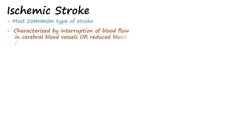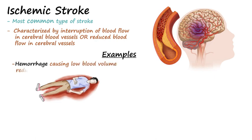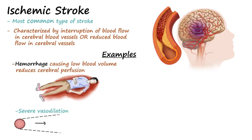The most common type of stroke is an ischemic stroke, characterized by interruption of blood flow in cerebral vessels. Examples of causes include hemorrhage in other parts of the body that reduces cerebral perfusion, severe vasodilation, a blood clot, or atherosclerosis.